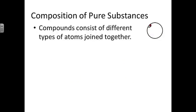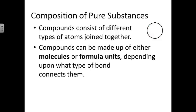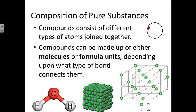Compounds consist of different types of atoms joined together. As we see in this little circle view screen, we can see little water molecules moving across the viewer. Compounds can be made up of either molecules or formula units, depending upon what type of bond connects them. We'll discuss that more later. Here's a ball and stick model of water, and this on the right is an example of table salt, sodium chloride, shown in a crystalline view.